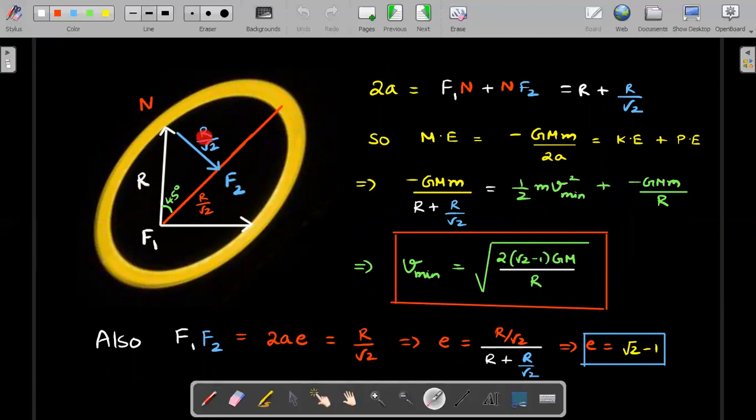So I have borrowed that minimum condition, right? This is capital R. This is R by root 2. And therefore, this also should be R by root 2. What is the value of 2A? 2A is this plus this distance. So I have written that R plus R by root 2. I got the value of 2A.